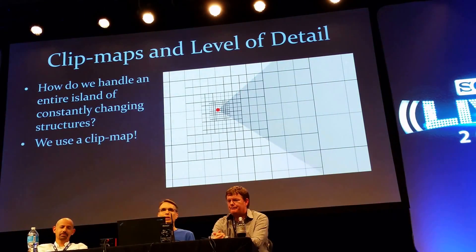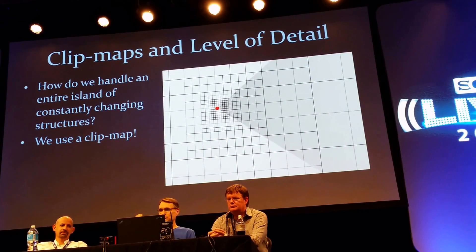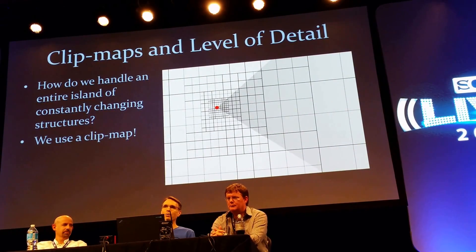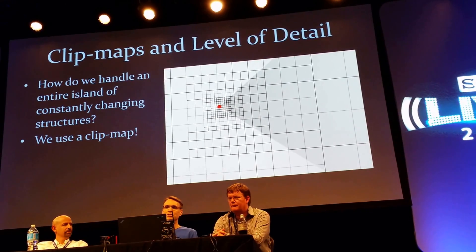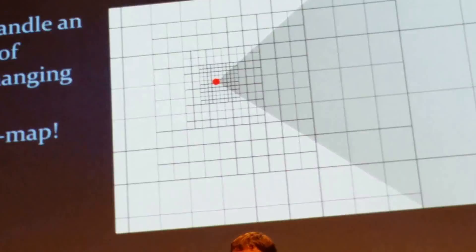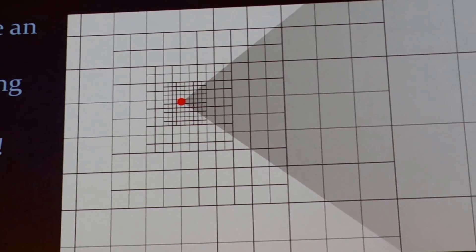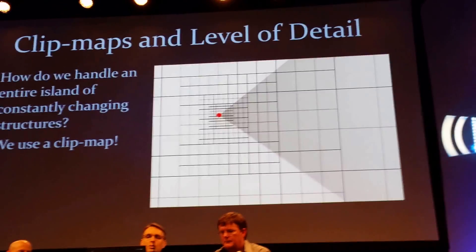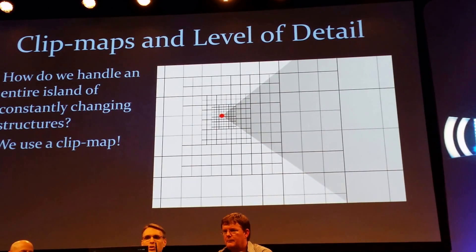What is a clip map? A clip map is a structure that says, where I'm standing, I want to include all of the really high detail information. So you see in this drawing, the red dot is where you would be standing, and all those little squares around it represent what we call cells. Each cell is about 40 by 40 by 40 boxes and contains all the information close around you.